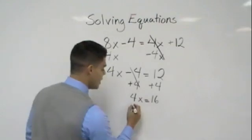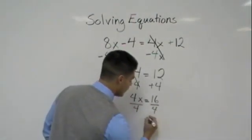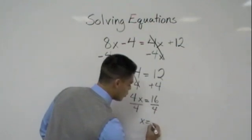Get rid of the 4 by dividing by 4, and these should be steps that we're getting used to now. X should equal 4.